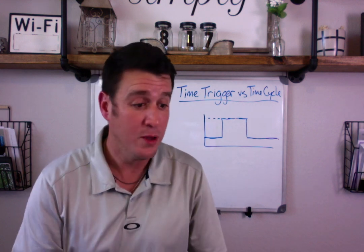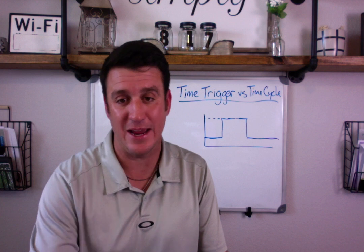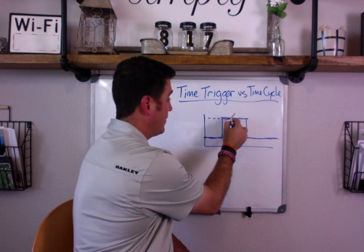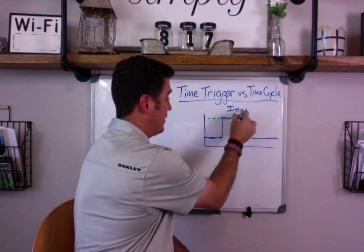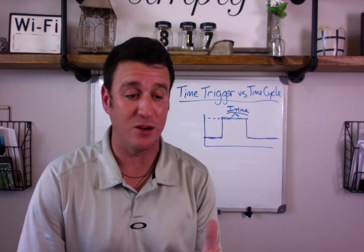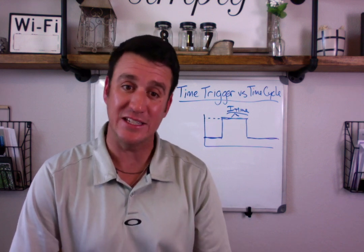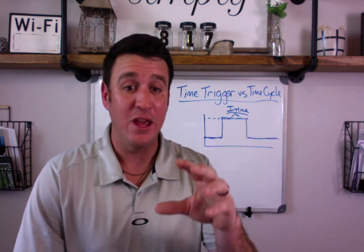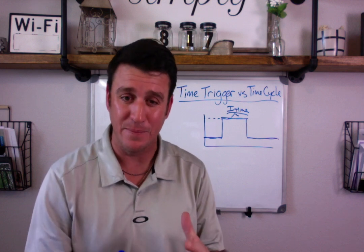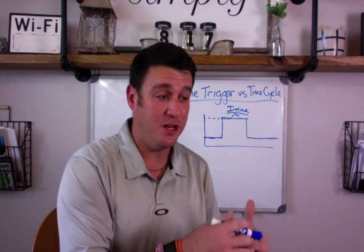That is not what pressure control or PRVC operate off of. They operate off of a time cycle, which means increase the pressure to the set pressure limit and then hold for a set I-time. So your cycle mechanism is I-time. When students tell me the cycle mechanism in pressure control, I say be more specific, and then they say I-time. I do that to eliminate the confusion between how time is a trigger but also a cycle.